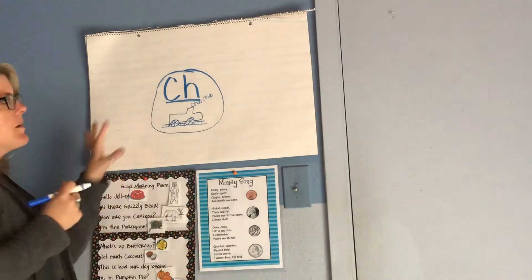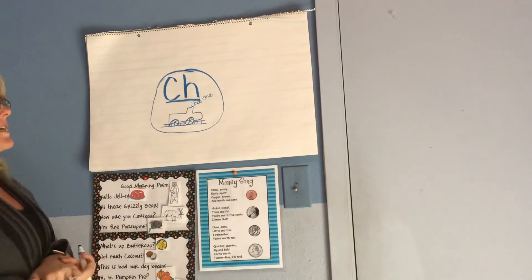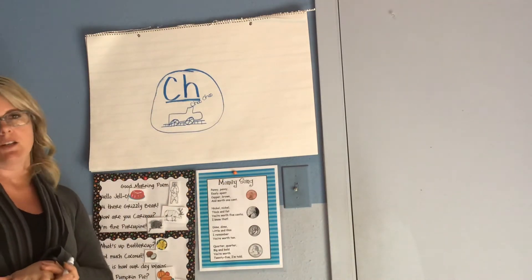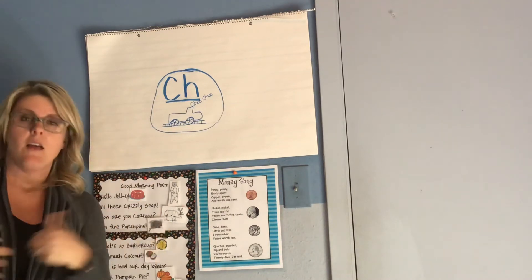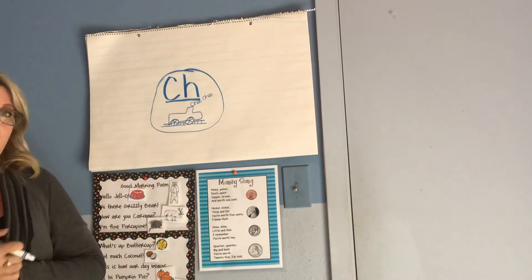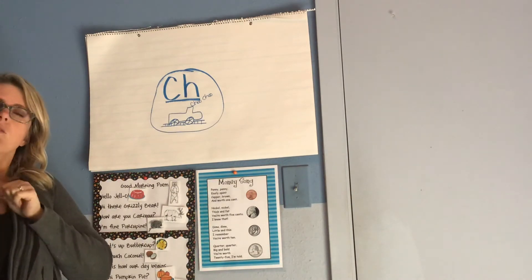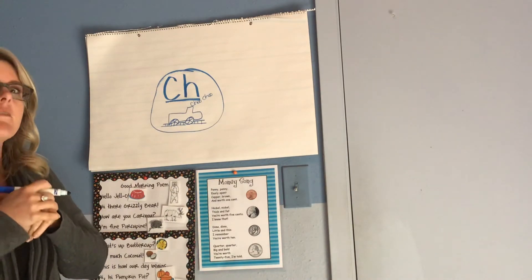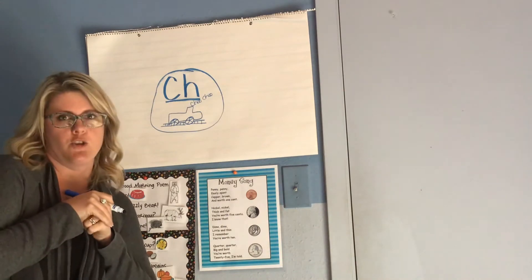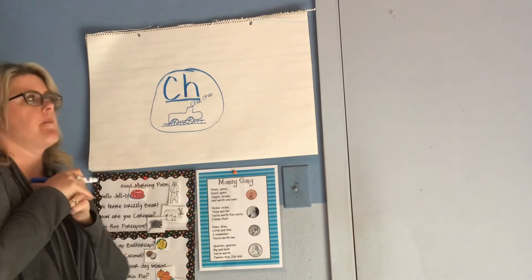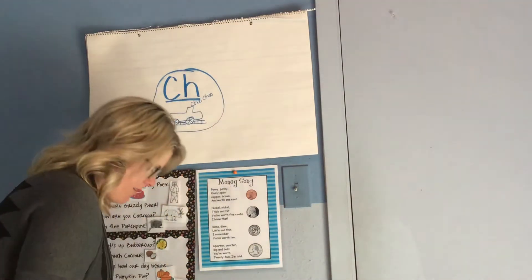So we're going to make a circle map of words that you hear the ch-ch sound in. They might be at the beginning of the word or they might be at the end of the word — whichever you want to think about. I want you to think about the sound and let's see if I can figure out what words you're thinking of and write them up here. Ch-ch-ch-ch-ch.